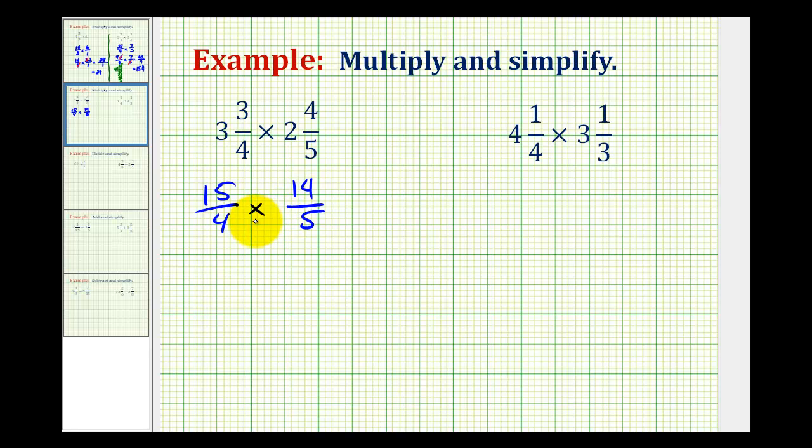Now before we multiply here, we want to try to simplify by identifying any common factors between any numerator and any denominator. So hopefully you can see there's a common factor of five between five and fifteen, and there's a common factor of two between two and fourteen.